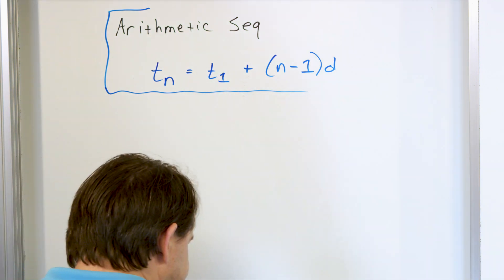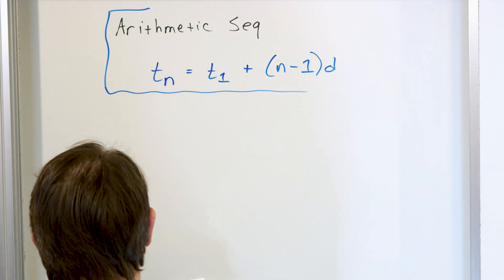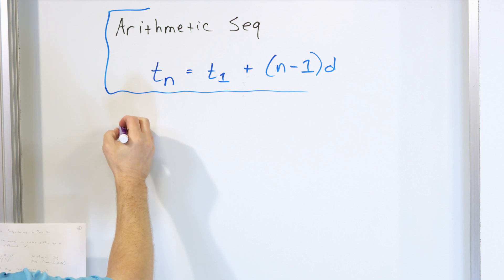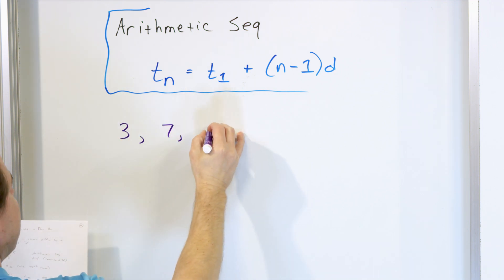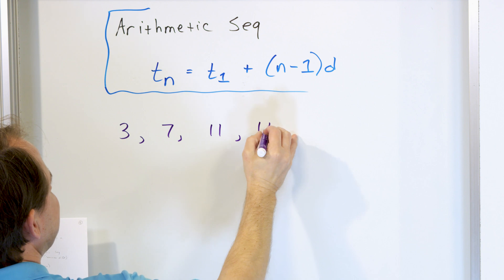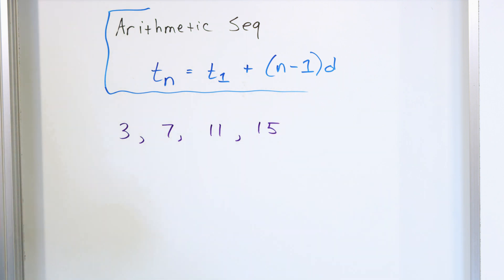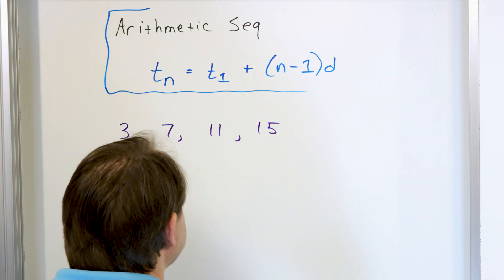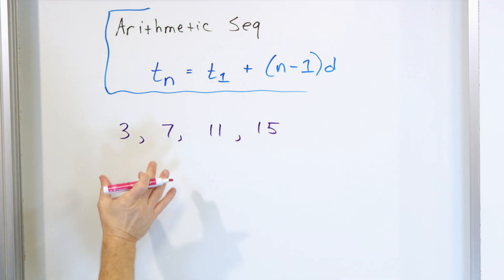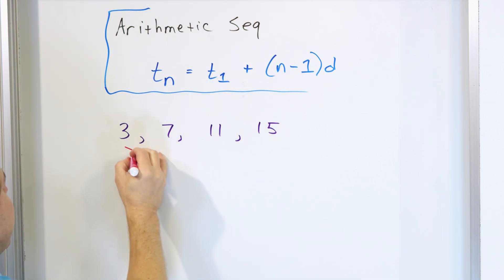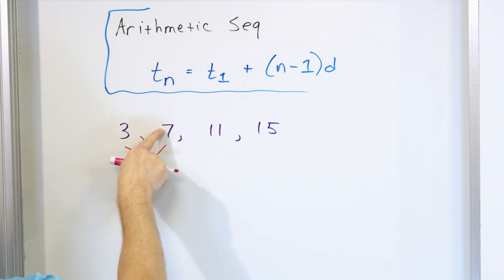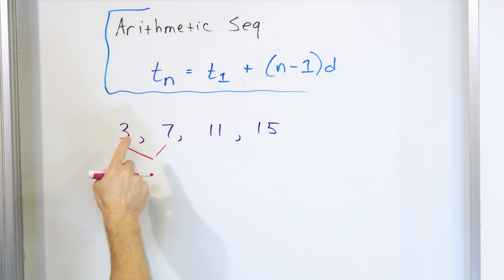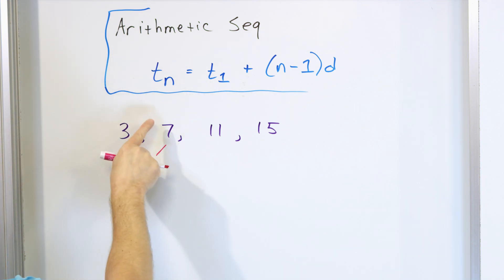We'll take a simple example to illustrate. If we have 3, 7, 11, and 15, and ask ourselves what kind of sequence this is, we can convince ourselves it is arithmetic. We look at pairs of terms and ask: what is the difference between them?